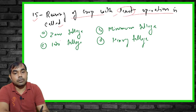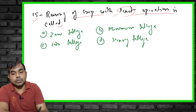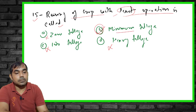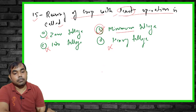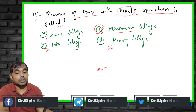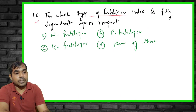The fifteenth MCQ: raising a crop with the least number of operations is called what? Zero tillage, no tillage, and heavy tillage are all wrong. The right answer is minimum tillage. When you till the soil minimally — doing only a very small number of operations — that is known as minimum tillage.